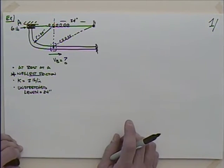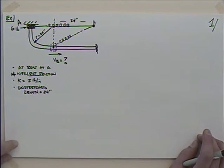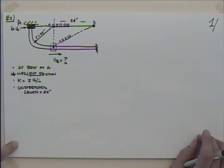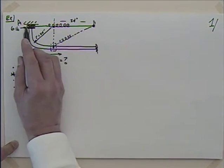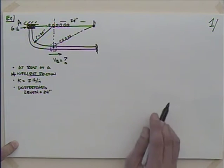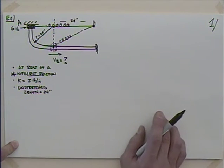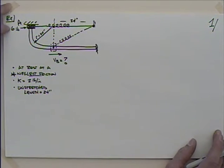At point A, the spring is going to be stretched an additional 24 inches beyond its unstretched length of 24, because it's 48 inches total. The plane up here, if we take that as our reference, is 24 inches above point B. The spring stiffness — the spring coefficient — is 2 pounds per inch. Units will be one of the bigger challenges in this problem.